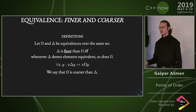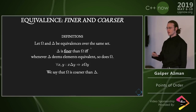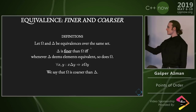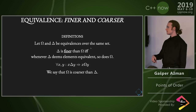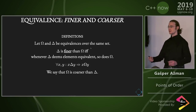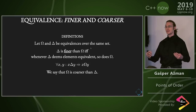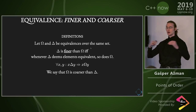So let's do two more definitions: finer and coarser. If omega and delta are equivalences over the same set, then delta is finer than omega if whatever delta deems equivalent, so does omega. Basically you're saying that the equivalence classes are like increasing resolution, but leaving all of the lines you already have where they are. You can't overlap the lines that you have.